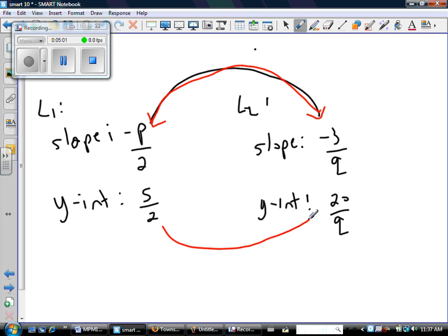Same thing with the y-intercepts. They have to be the same. They don't look the same, but we have to make them the same. So let's start with the y-intercepts. And I want to start with the y-intercepts because the y-intercept only has q. There's no p in it. So there's only one variable.